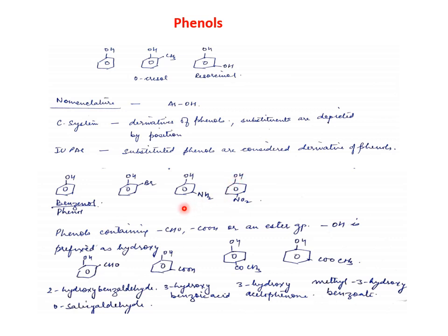So in all these cases we have given the position of the substituent group and depicted them as derivatives of phenol. If phenol has groups that are higher in the priority table — such as CHO, COOH, or an ester group — then OH is prefixed as 'hydroxy' and treated as a substituent.